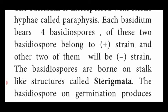Agaricus shows a very short diploid phase, a short haploid phase, and also a prolonged dikaryotic phase. This is the sexual reproduction and structure of basidiocarp.